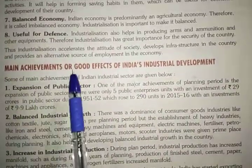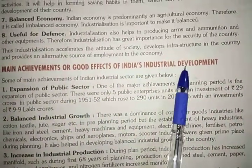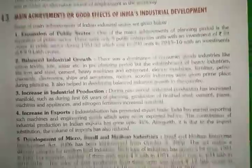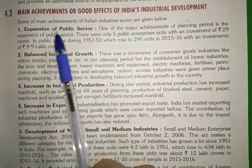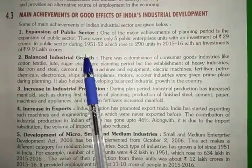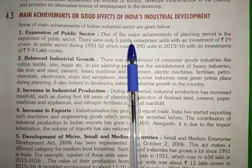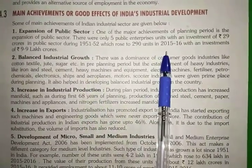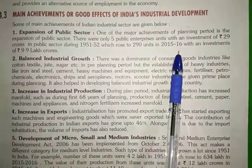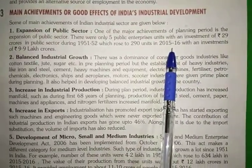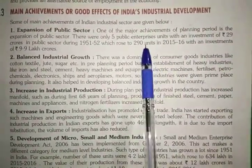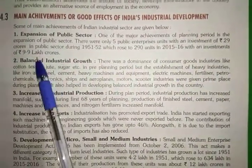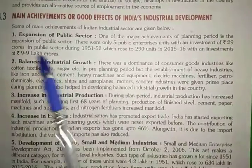Now let's look at the achievements and good effects of India's industrial development. The first one is expansion of the public sector. There were only five public enterprises in 1951-52 and the investment was only 29 crore. But by 2015-16, after industrialization, the industrial units grew to 290 — from 5 to 290 — and investment rose from 29 crore to 9.9 lakh crore. That is a huge amount.